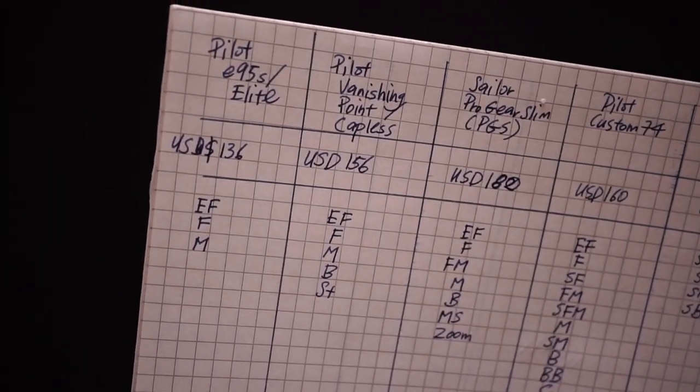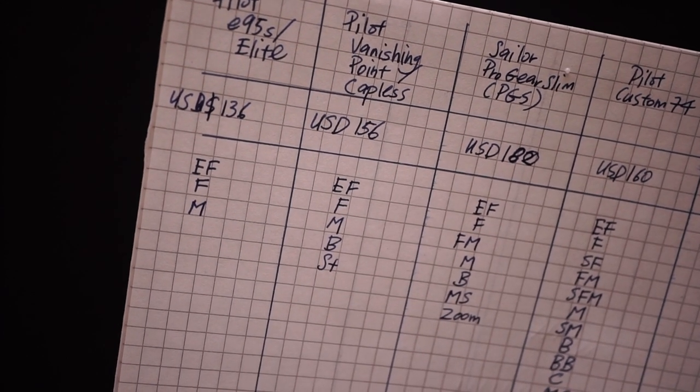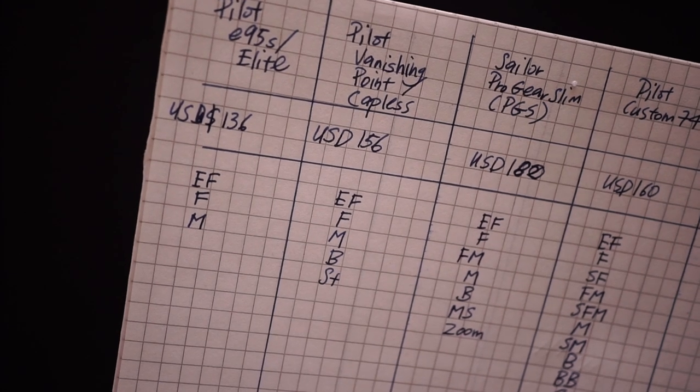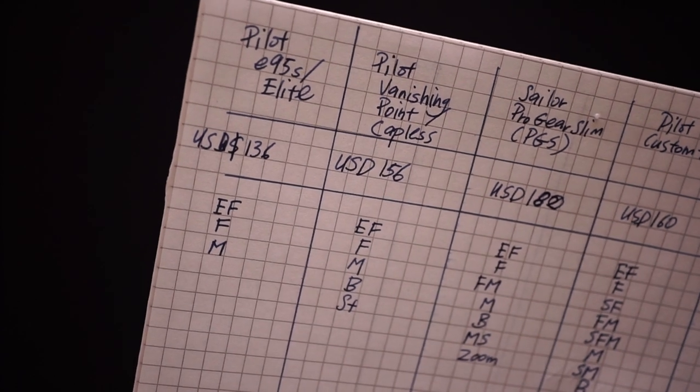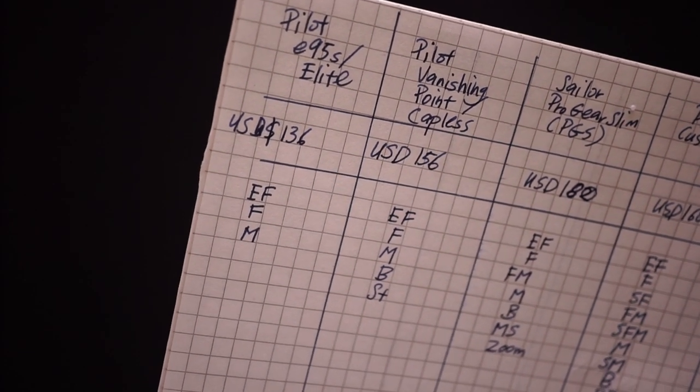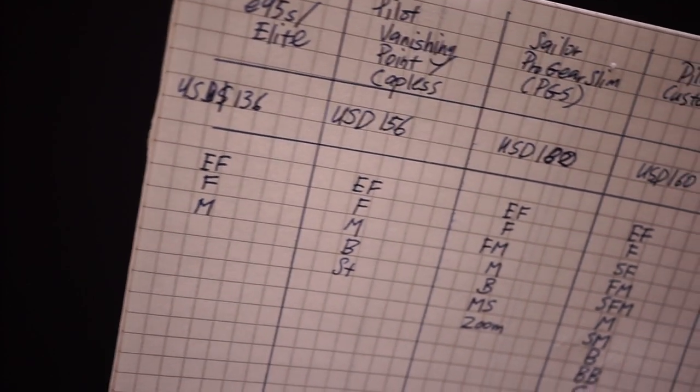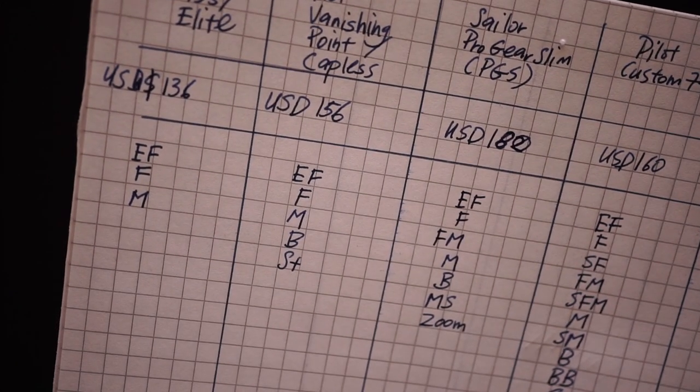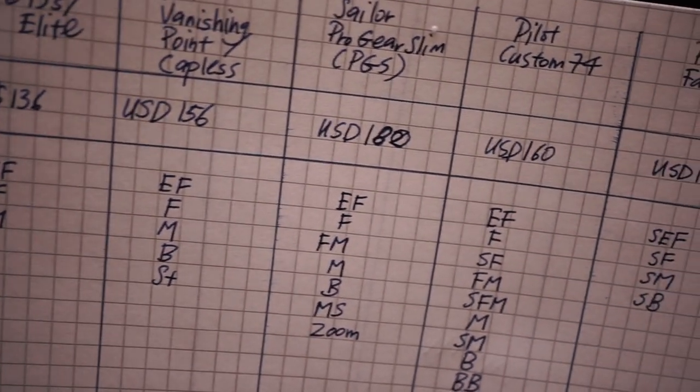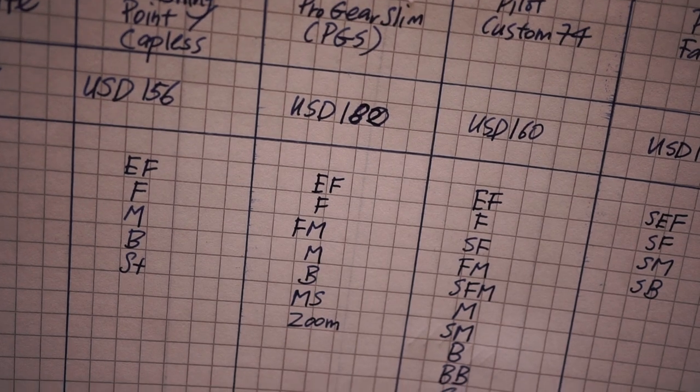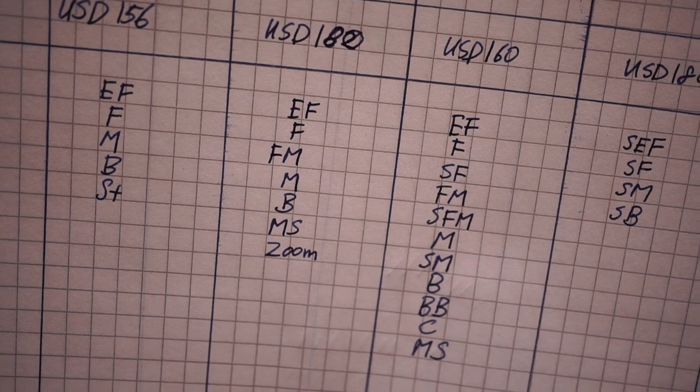I wanted to give you an idea in terms of the nib range as well. Don't hold me to this list because I pulled them out the best I could. The E95S has a fairly modest nib selection at EF extra fine, fine, and medium. Vanishing Point has EF, fine, medium, broad, and stub. Pro Gear Slim has EF, fine, medium, broad, MS music, and zoom nib.